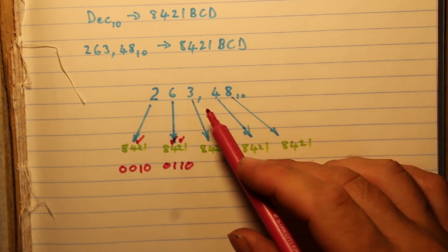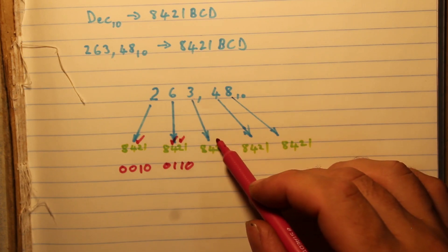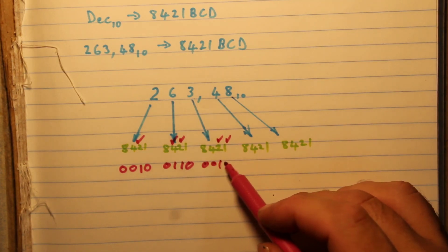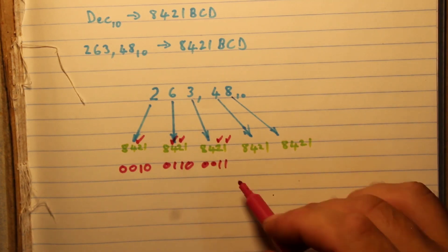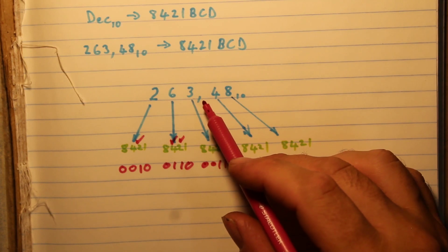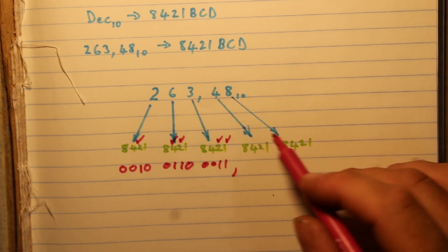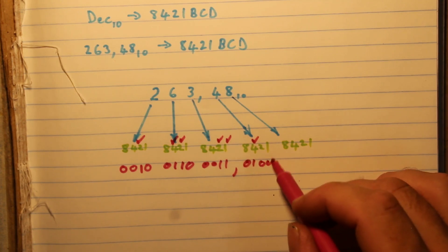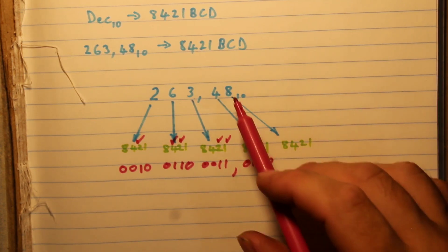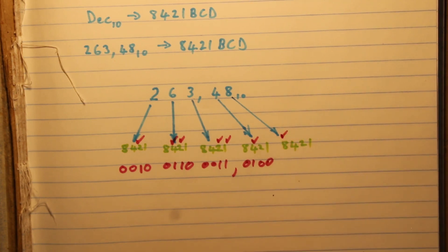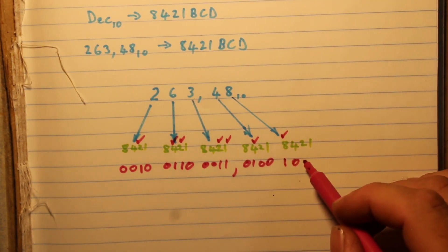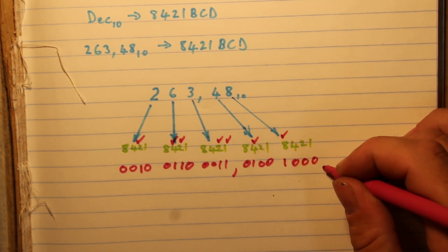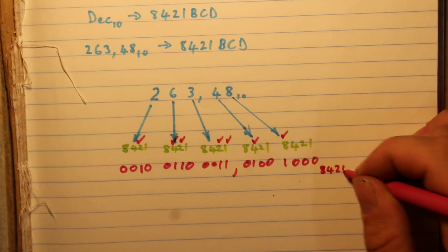The next digit is 3: two plus one equals three, so we write 0011. Then we put the comma in, and for 4 we just use the four, so we write 0100. The last digit is 8, so we just use the eight and write 1000. The radix notation is written as 8421 BCD.